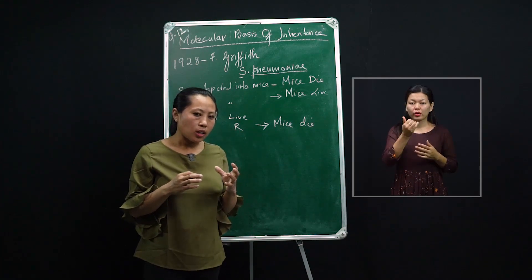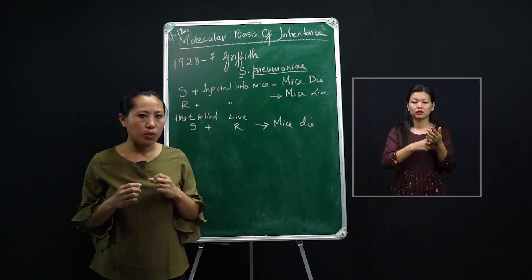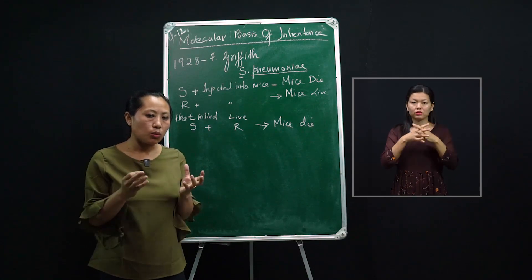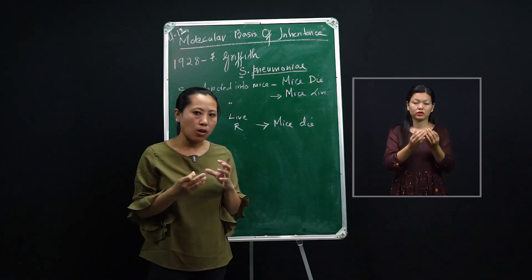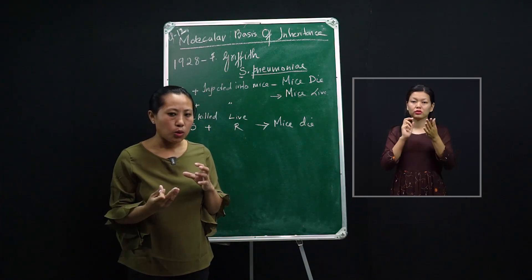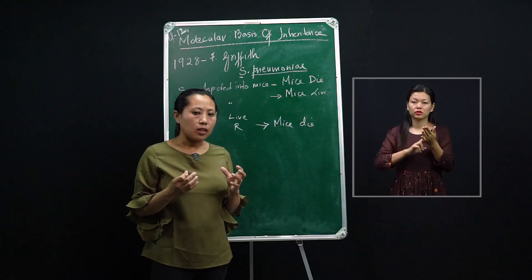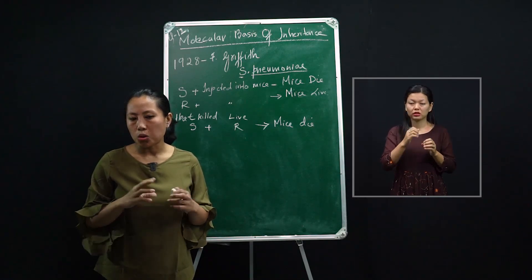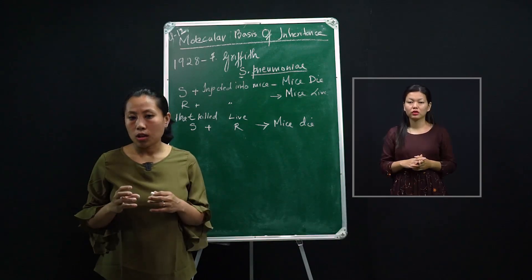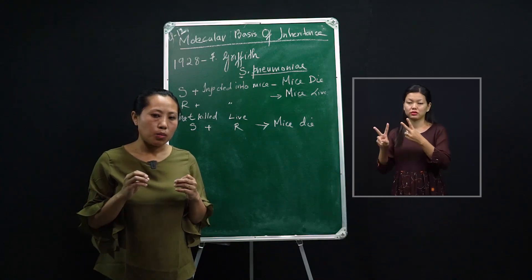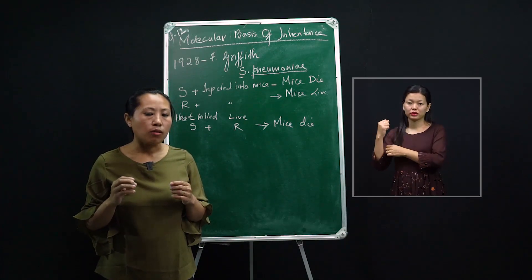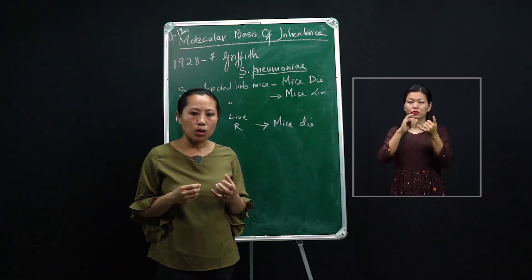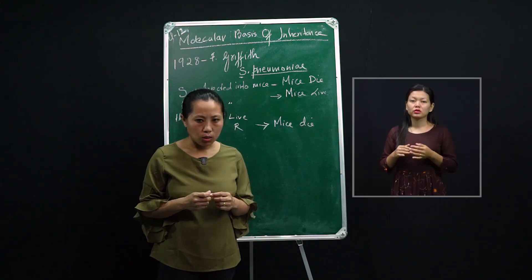The mucus coat gives the S strain protection against WBCs, enabling it to be virulent and pathogenic, causing pneumonia. The R strain, when cultured, does not produce shiny or smooth colonies because it lacks the mucus coat. So the S strain, because of the polysaccharide mucus coat, is virulent and causes pneumonia, while the R strain, which lacks the mucus coat, is avirulent, non-pathogenic, and does not cause pneumonia in mice.